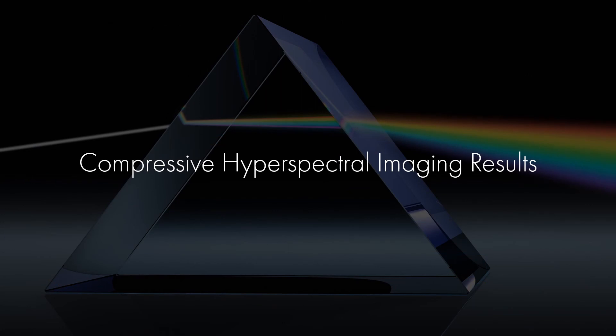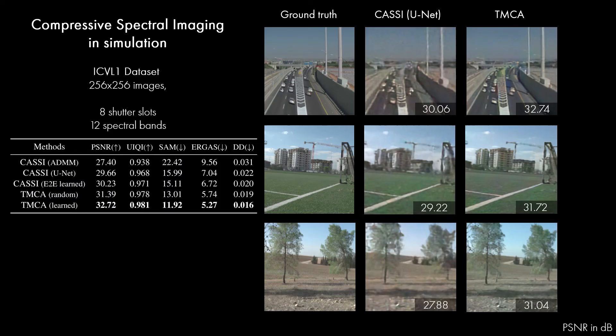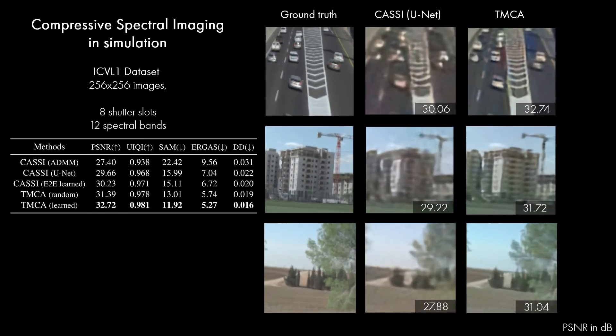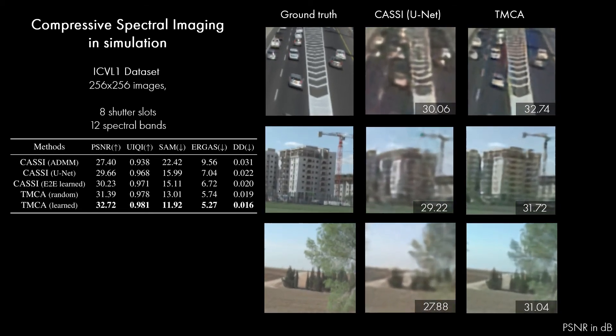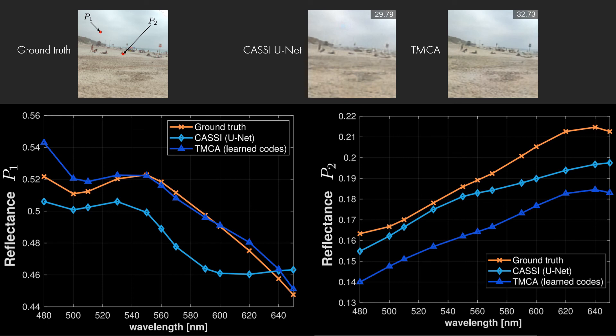Let's show this is indeed the case in our experiments, starting with our compressive hyperspectral imaging setup. TMCA outperforms other single snapshot compressive spectral imaging setups we surveyed on all metrics. The reconstructed images are much crisper. And the 12 spectral bands we recover are much more accurate.